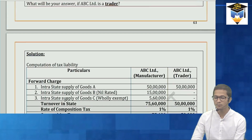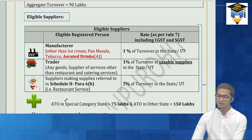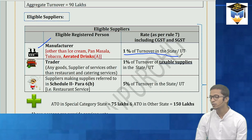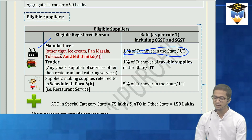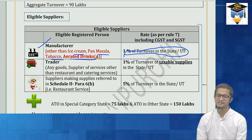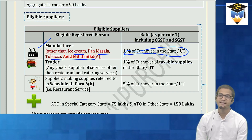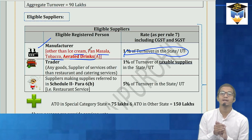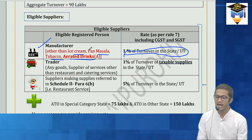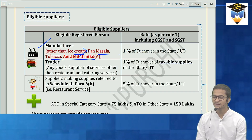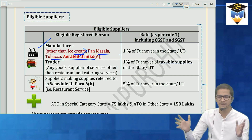Now coming to Rule 7 — the rates. I-PAT manufacturers cannot avail composition scheme: I for ice cream, P for pan masala, A for aerated drinks, T for tobacco. If you are a manufacturer of these, you don't get composition scheme benefit. If you are a regular manufacturer, the rate is 1% of turnover in state — all turnover combined, 1% to be paid.